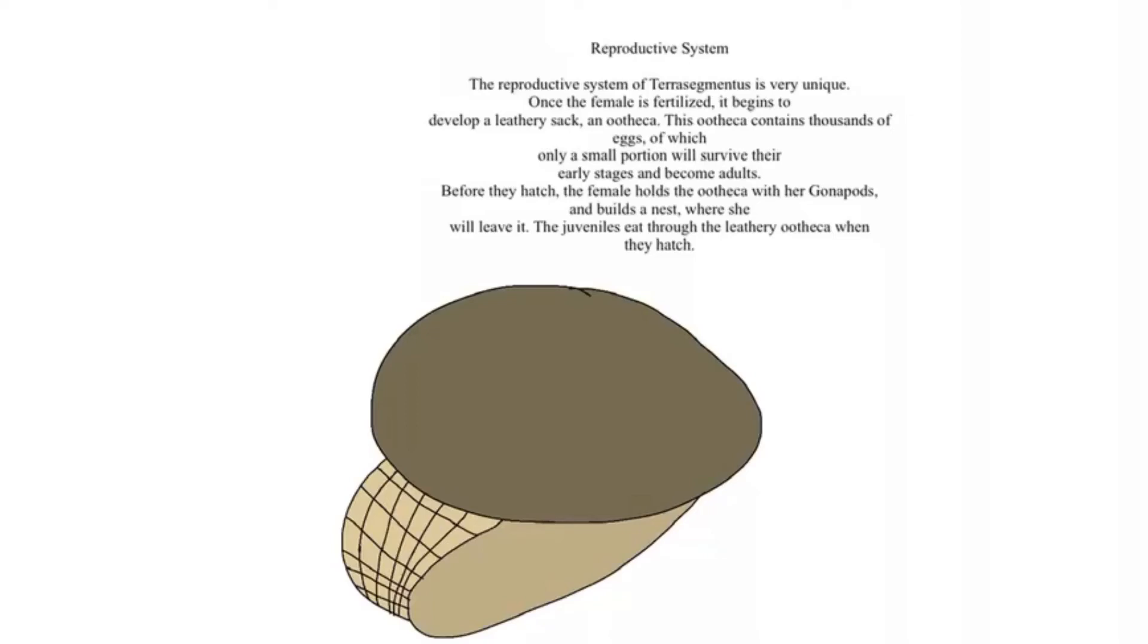The male will transfer the gametes into the female, and the eggs will be protected inside the female's body via a system of internal reproduction until they're ready to be laid.